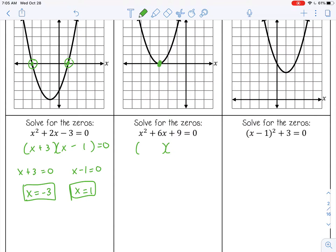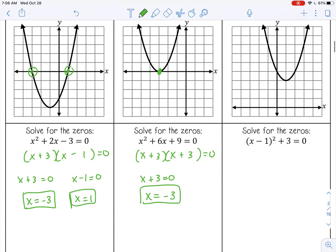The second one. Factors of 9 that will add to give me 6. I can do positive 3 and positive 3. So set those equal to 0. You notice they're the same thing, so you don't need to solve twice. Just solve one of them. You notice you only get one root, negative 3, which is what is shown on the graph.